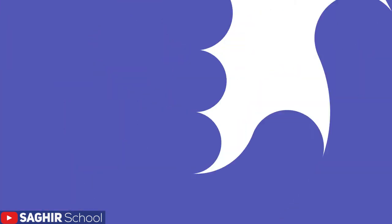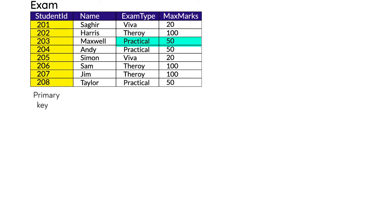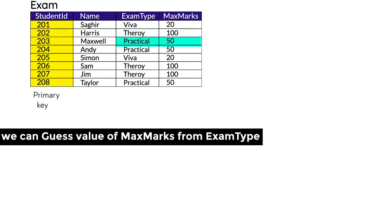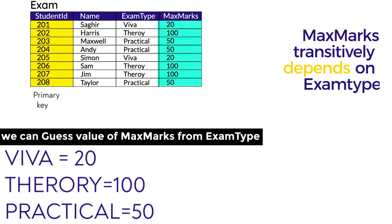In this table, student ID is the primary key column, and name, exam type, and maximum marks are non-key columns. From the table, we can guess that if a student is opting for viva, maximum marks will be 20; theory will be 100 marks; and practical will be 50 marks. This means we can guess the maximum marks column from the exam type column — maximum marks is transitively depending on exam type.